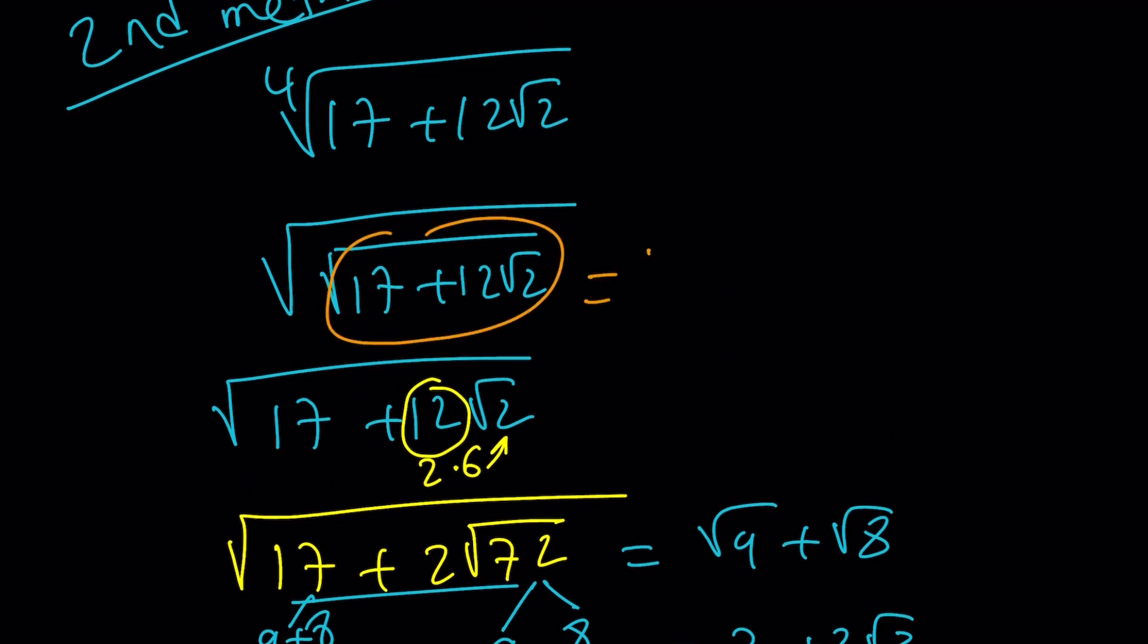So the answer is going to be the square root of 3 plus 2 root 2. But my shortcut works again. It's amazing, right? Make a look. Find two numbers whose product is 2 and whose sum is 3. Oh, come on. You know that. 2 and 1. So this is going to be square root of 2 plus square root of 1, which is 1 plus root 2 as before.